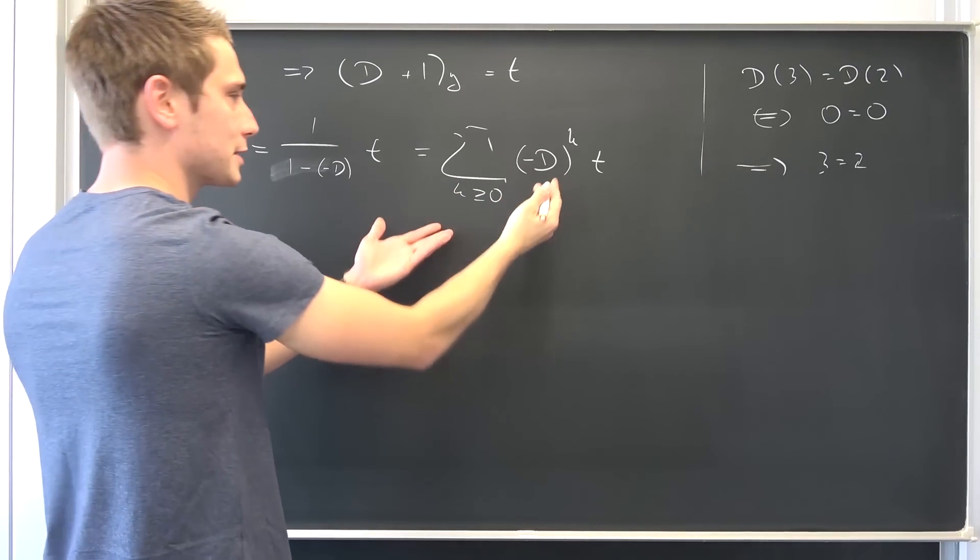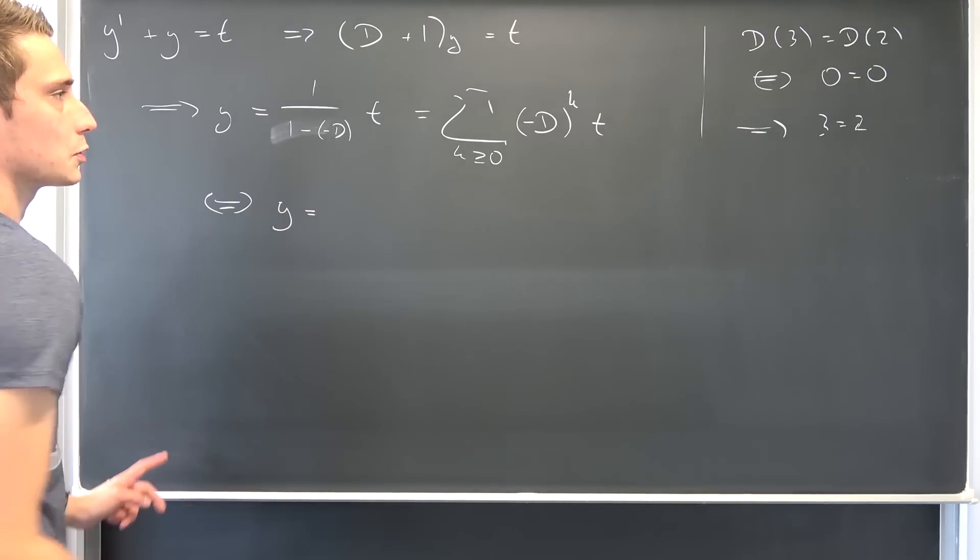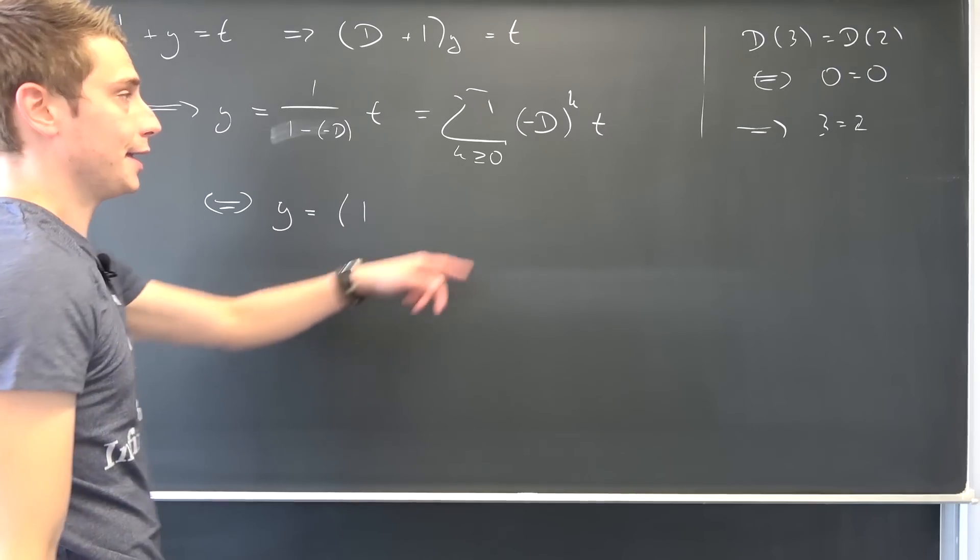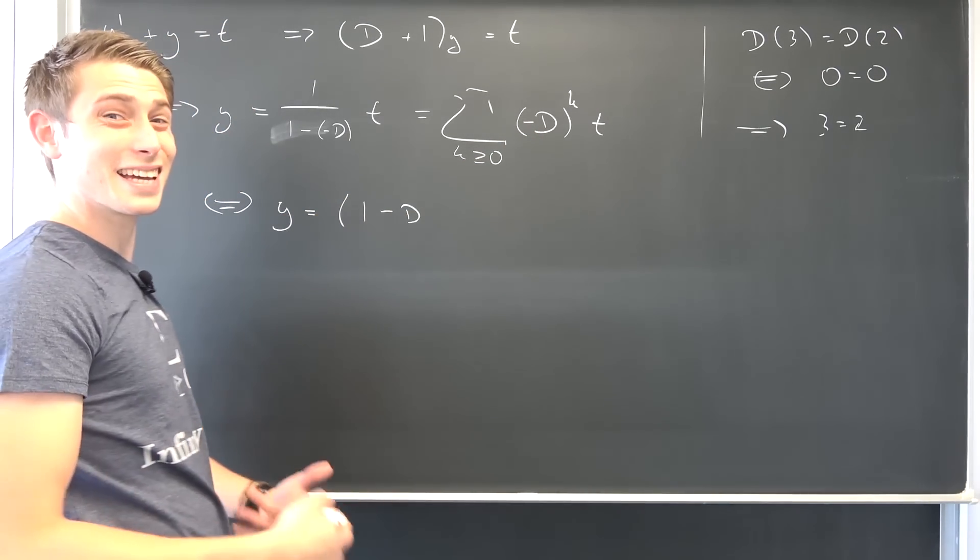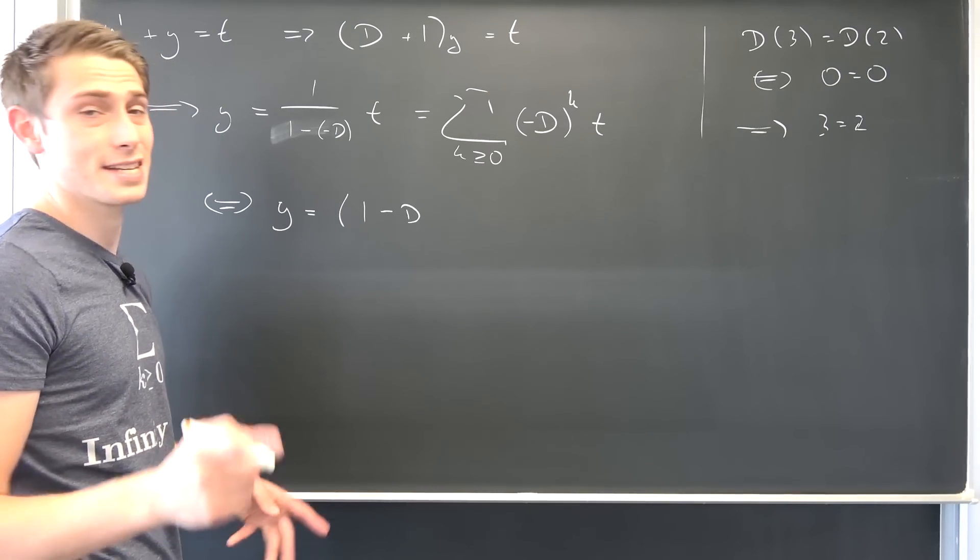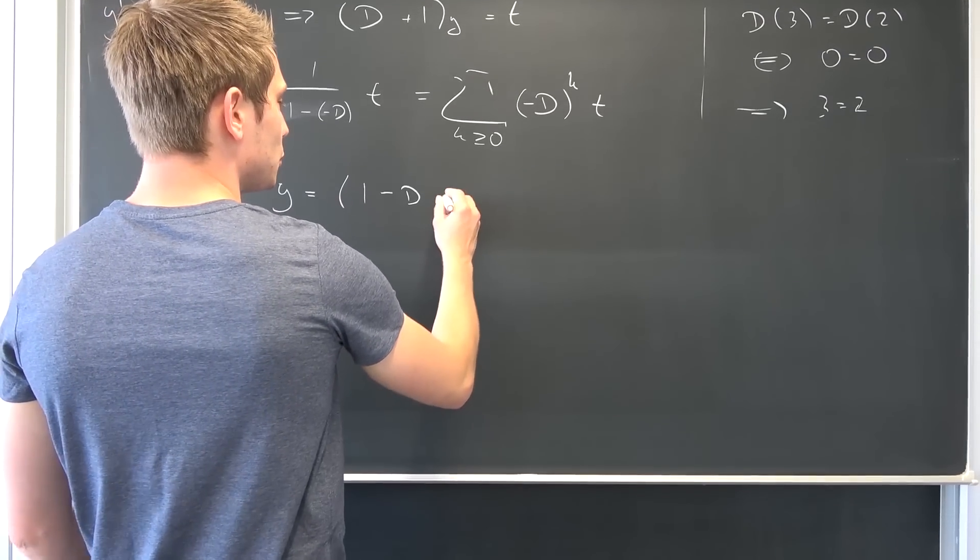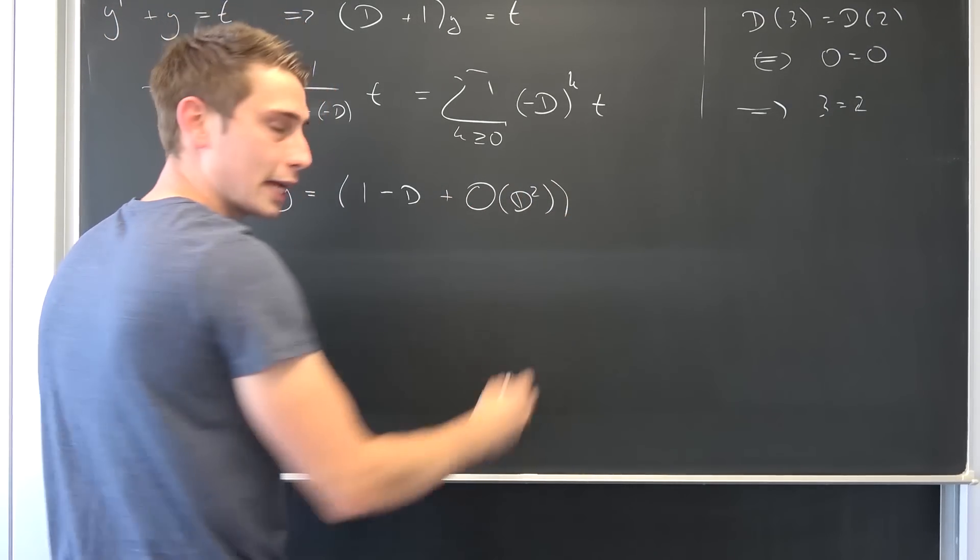Well, we can write all of this out. Okay, we are going to be left with y being equal to, okay first iteration leaves us with 1, next one is the negative D, and then we are going to have higher and higher terms. But they do not matter. Do you see why they do not matter? I'm going to tell you in a second. I'm going to denote this as t plus O of D squared, okay, times t.